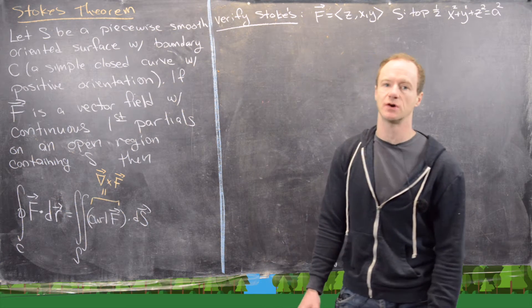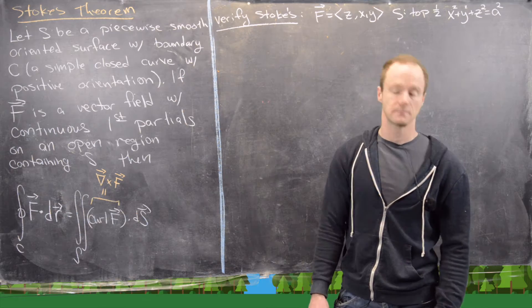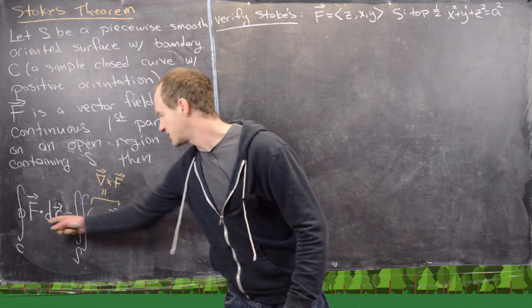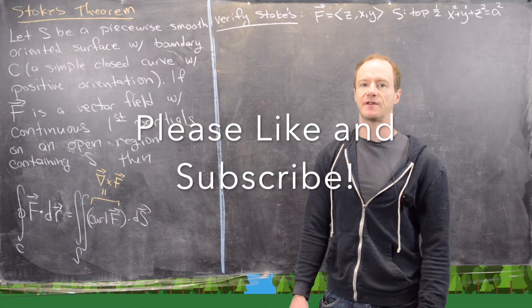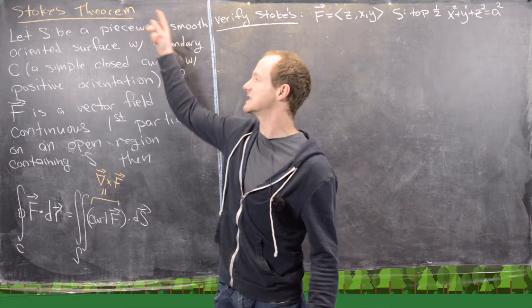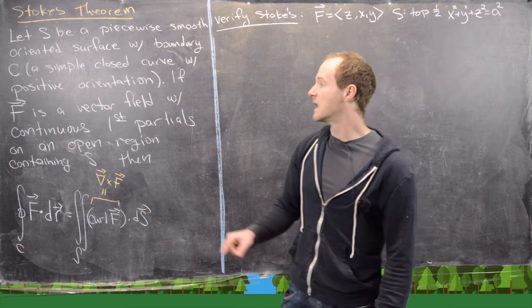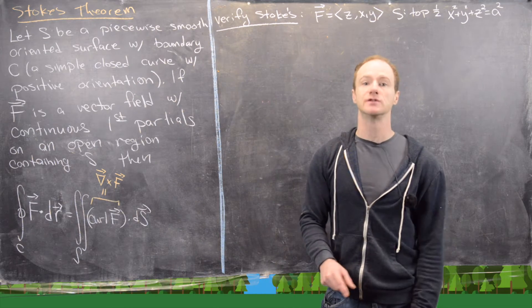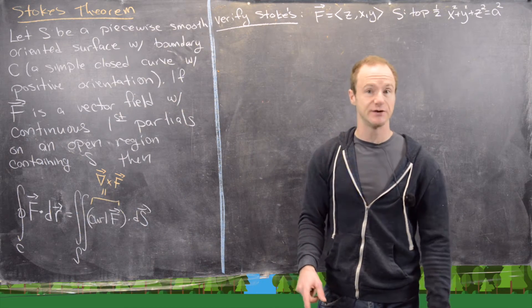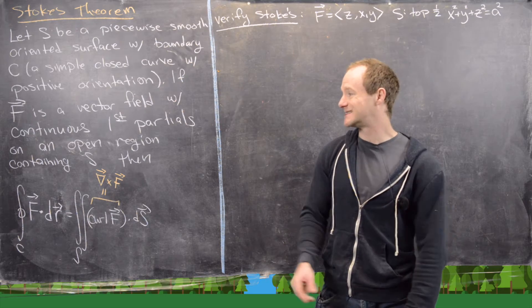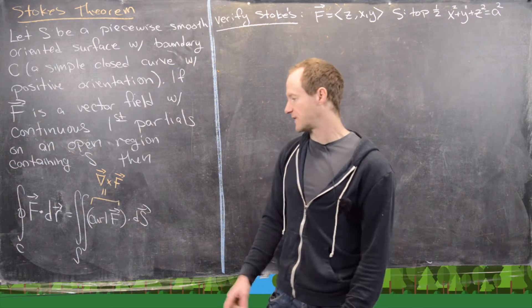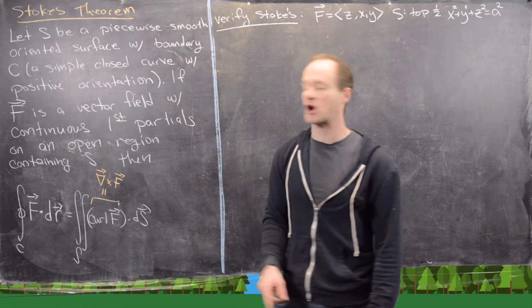In a previous video we went through all of the details of Stokes' Theorem and we proved a very special case of it. In this video what I want to do is do an example where we verify Stokes' Theorem — that is, we calculate the left-hand side and the right-hand side for an example and show that they're the same. Let's just recall Stokes' Theorem: you have a nicely defined surface in R³ and C, which is a simple closed curve that bounds that surface. You've got a vector field with continuous first partials on a region containing your surface, and then the line integral over the simple closed curve of the vector field equals the surface integral of the curl of the vector field.